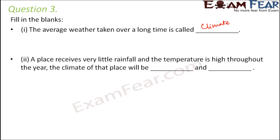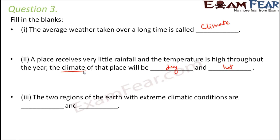A place receives very little rainfall and the temperature is high throughout the year — the climate of that place will be dry and hot. Very little rainfall means not much water, so the place is dry, and high temperature makes it hot. This doesn't mean every day the weather will be hot and dry — it might rain someday — but when you take an average over a long period of time, you find that most of the time it doesn't rain much.